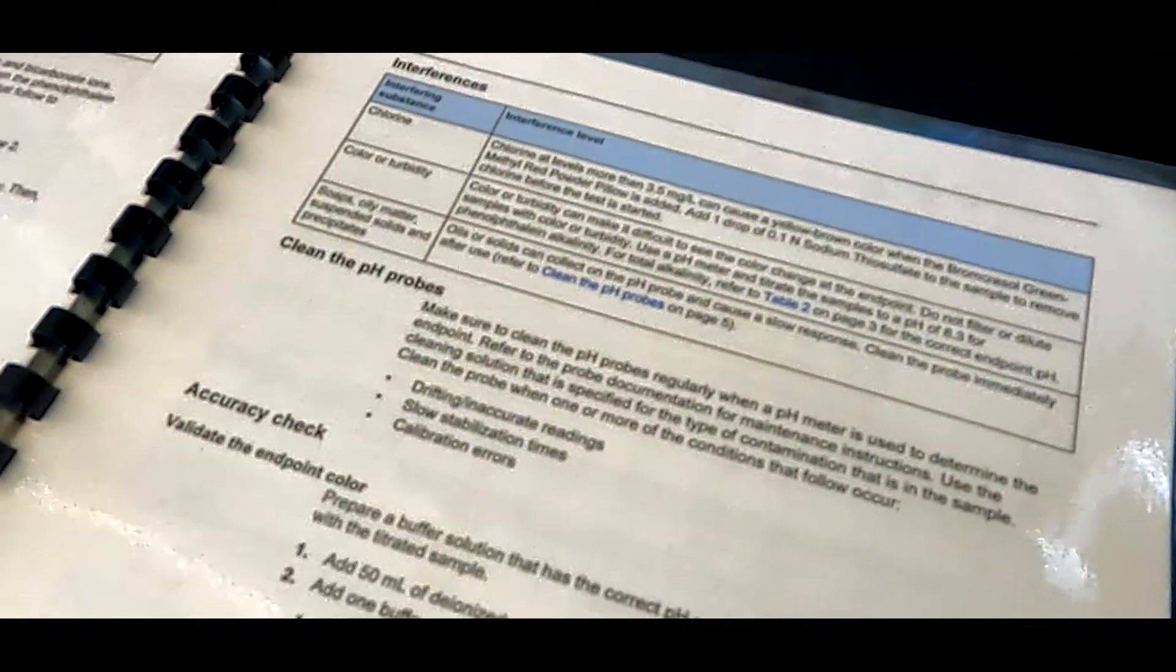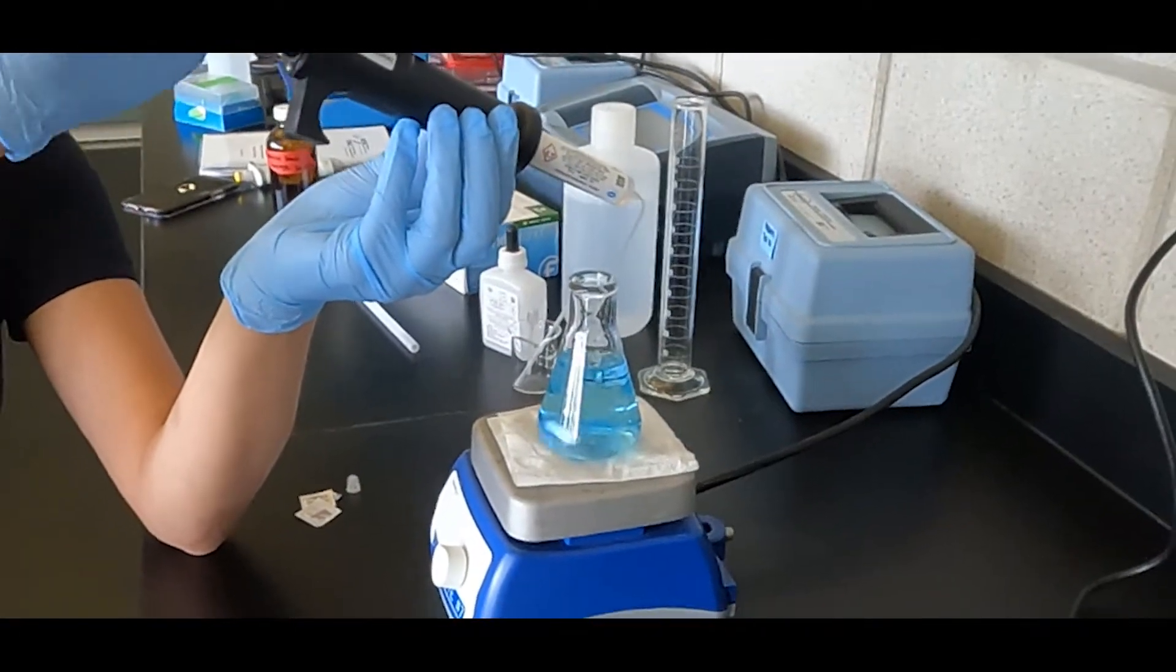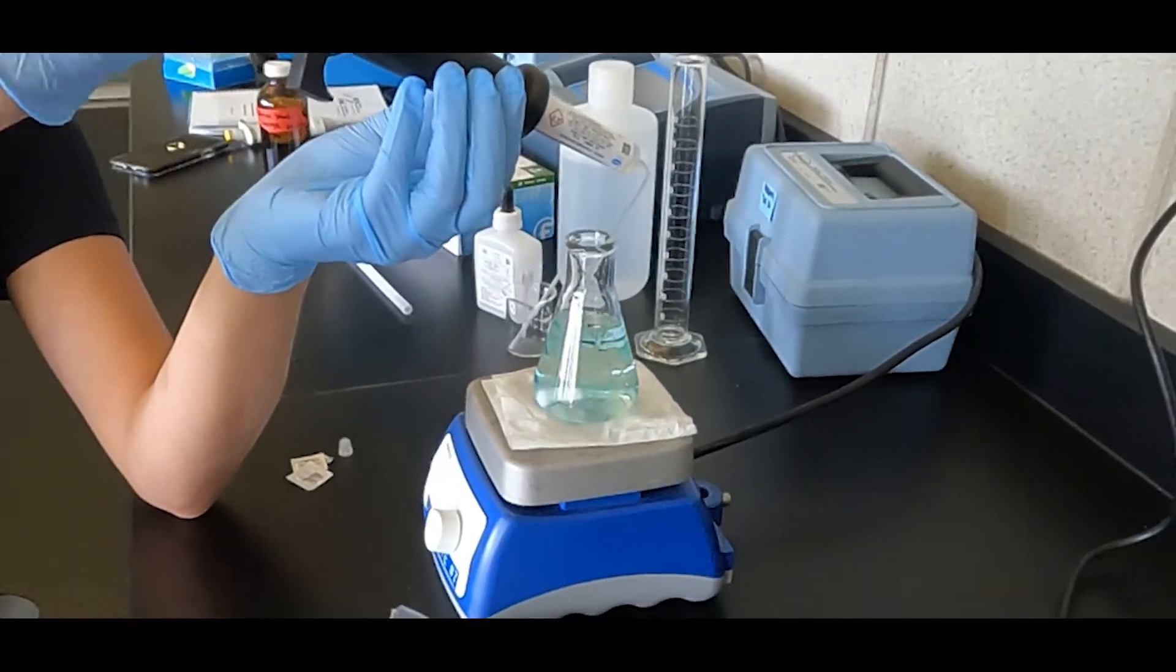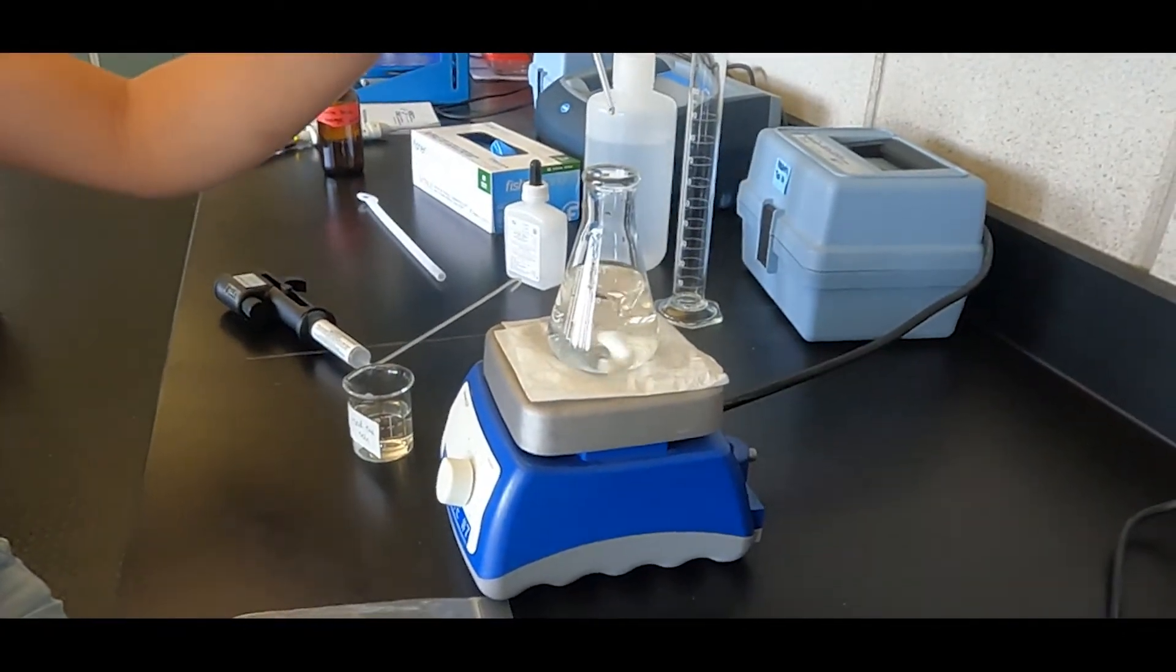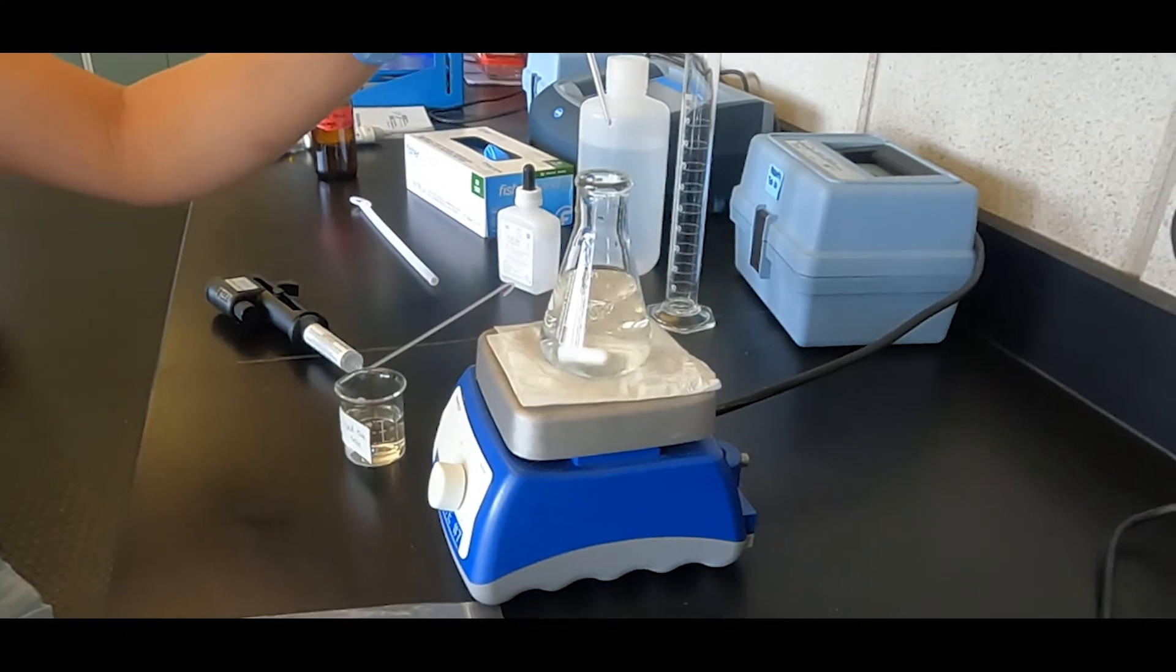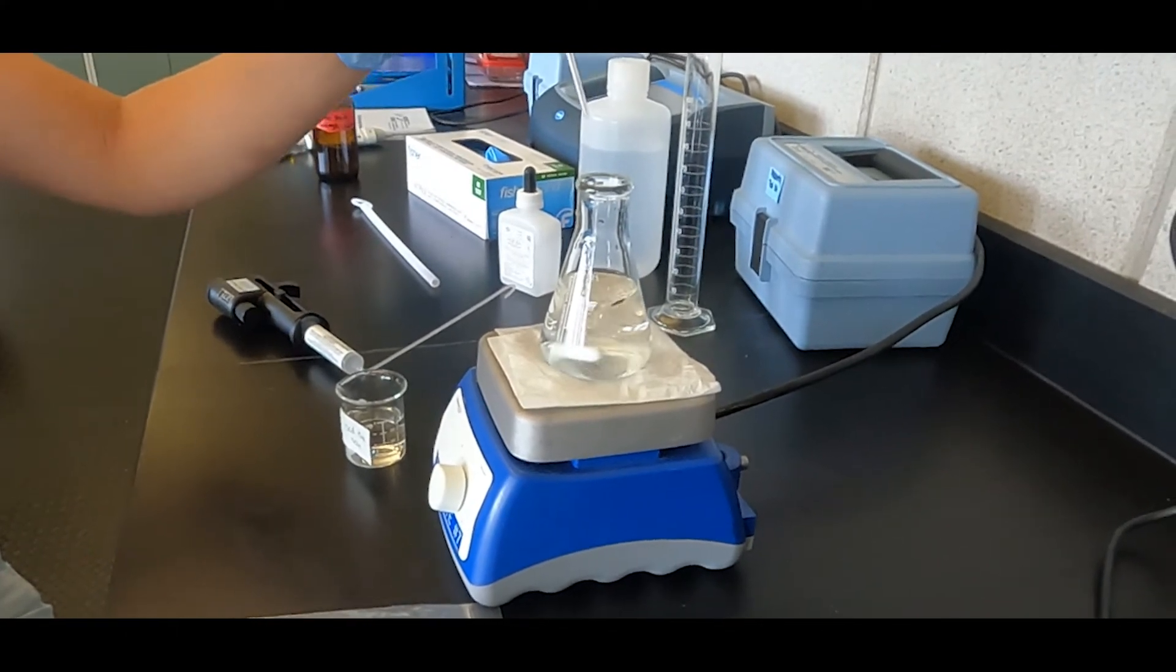It is important to note that if chlorine is present in a sample, it can cause a yellow-brown endpoint during the bromcresol green methyl red titration. To avoid this interference, add a drop of sodium thiosulfate solution to quench the chlorine before you start the test.